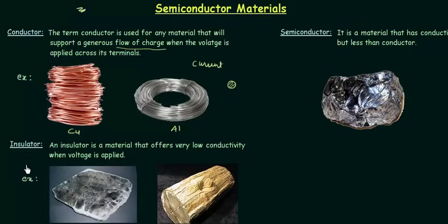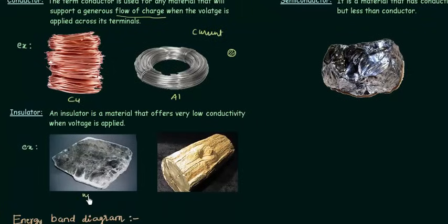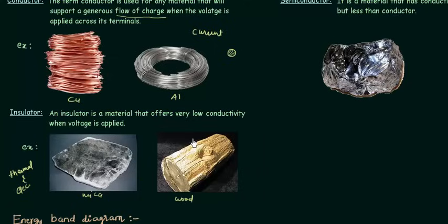In the case of an insulator, the flow of current — or conductivity — is very low when voltage is applied across its terminals. Examples are mica and wood. Mica is very important in electrical industries; it is used for thermal and electrical insulation in electrical equipment. The conductivity is really low and the flow of charge is nearly equal to zero.